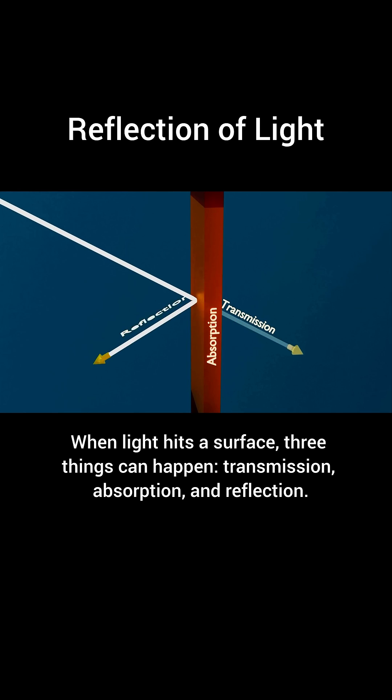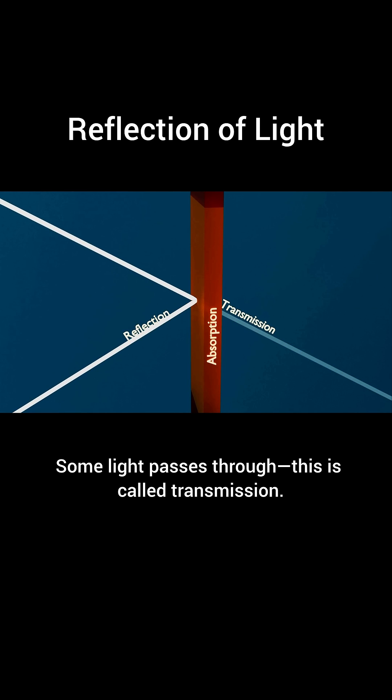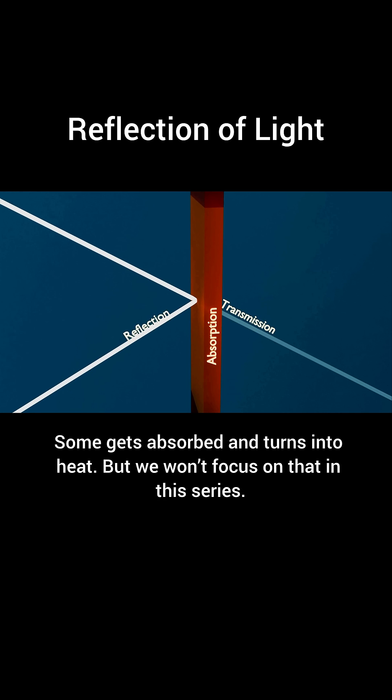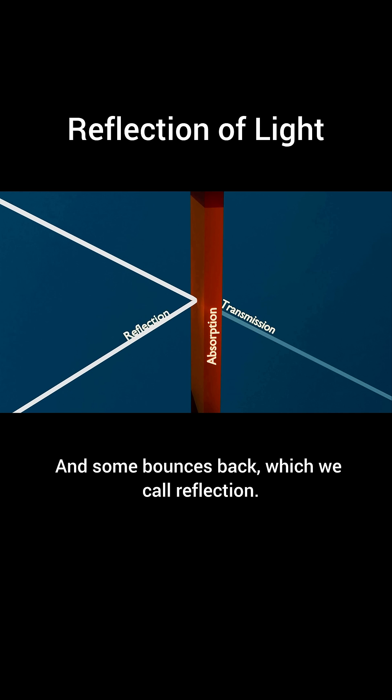When light hits a surface, three things can happen: transmission, absorption, and reflection. Some light passes through, which is called transmission. Some gets absorbed and turns into heat, but we won't focus on that in this series. And some bounces back, which we call reflection.